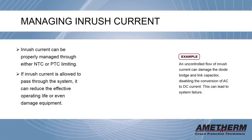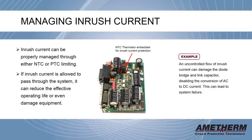Let's look at an example. As you can see in the photo here, an NTC thermistor has been embedded for inrush current protection. Without this thermistor, an uncontrolled flow of inrush current can damage the diode bridge and link capacitor, disabling the conversion of AC to DC current. This can lead to system failure.